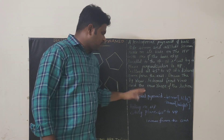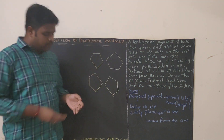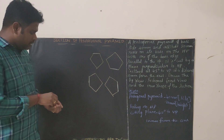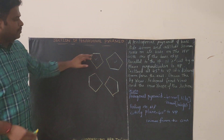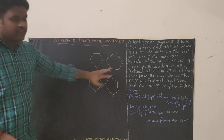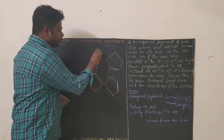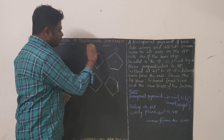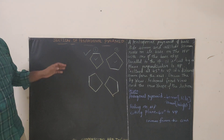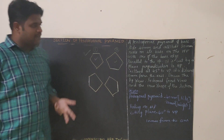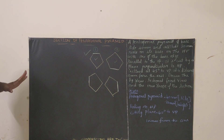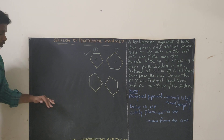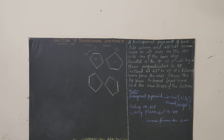The question asks to draw the top view, sectional front view, and true shape of the section. In this problem we can go with either orientation since they haven't specified whether the base edge is nearer to VP or farther away from VP. So out of these diagrams you can go with any one — I am going with the first one. Since it is resting on HP, we will initially draw the top view and then draw the front view.